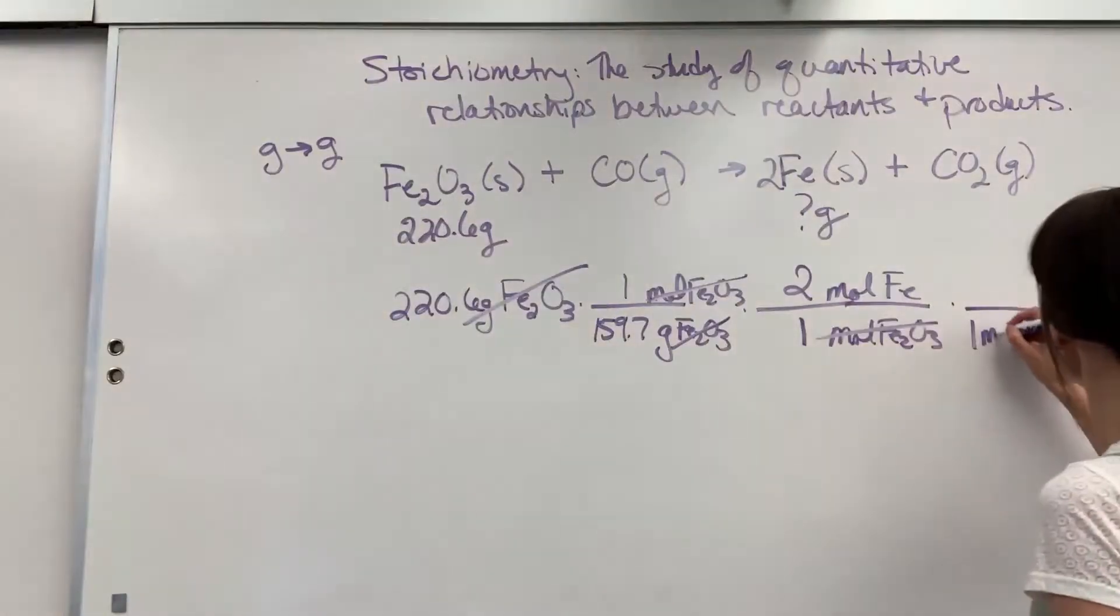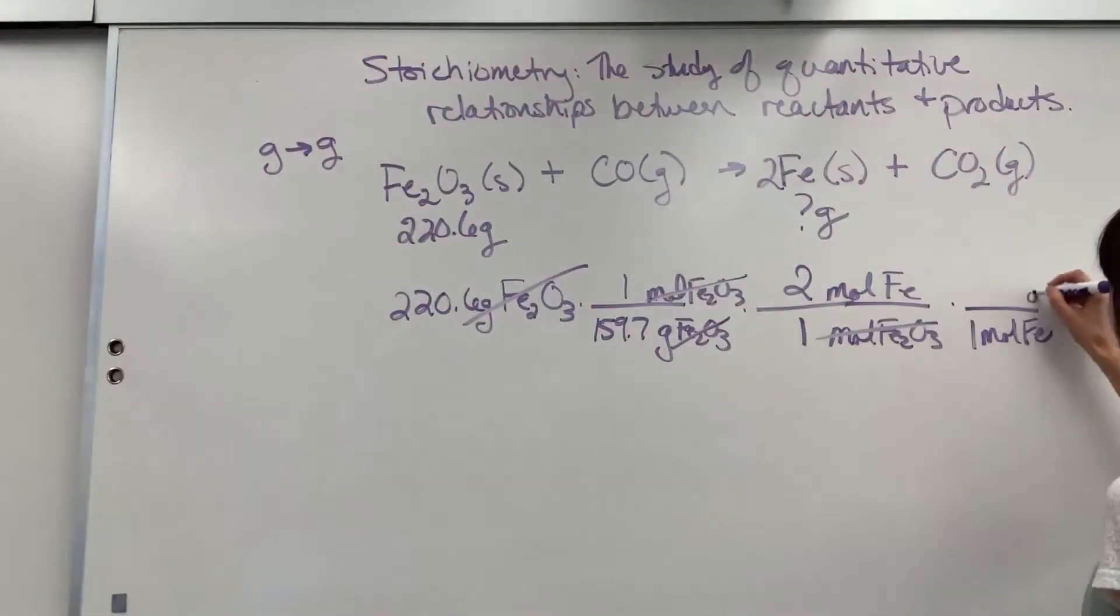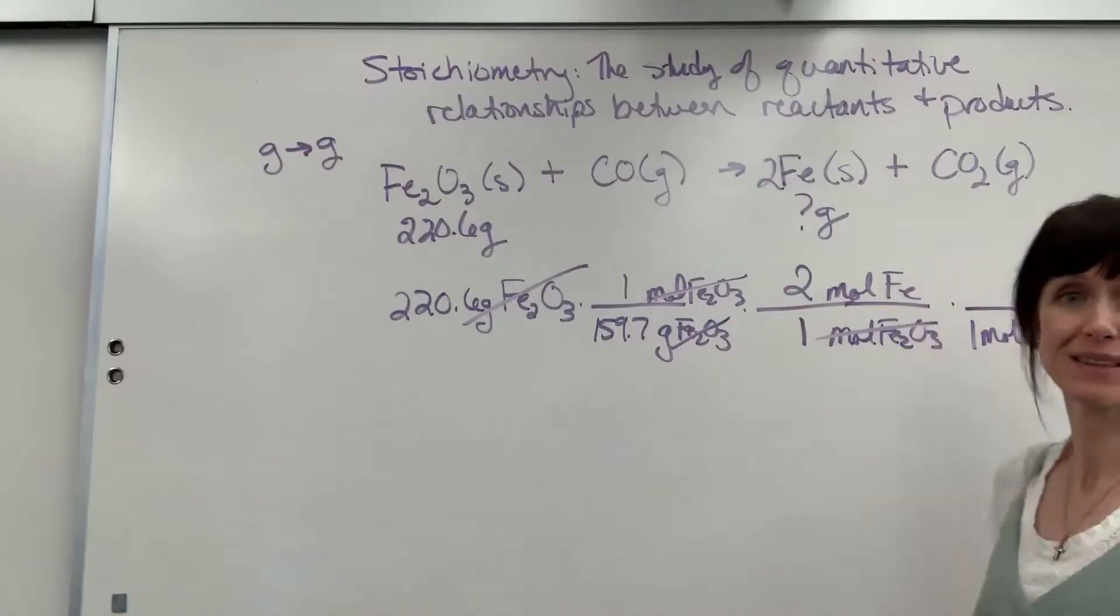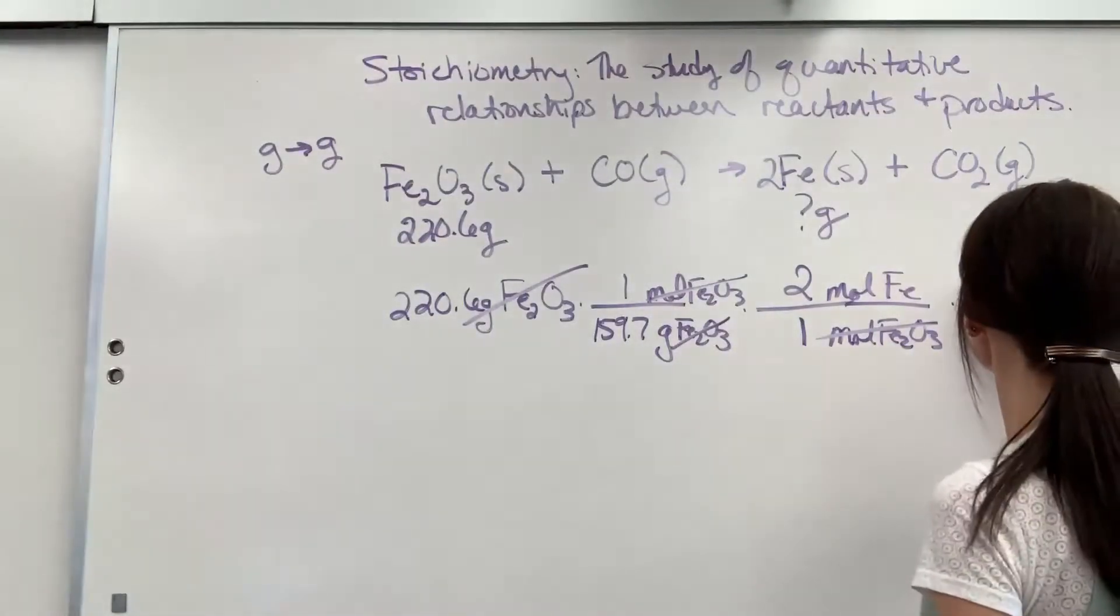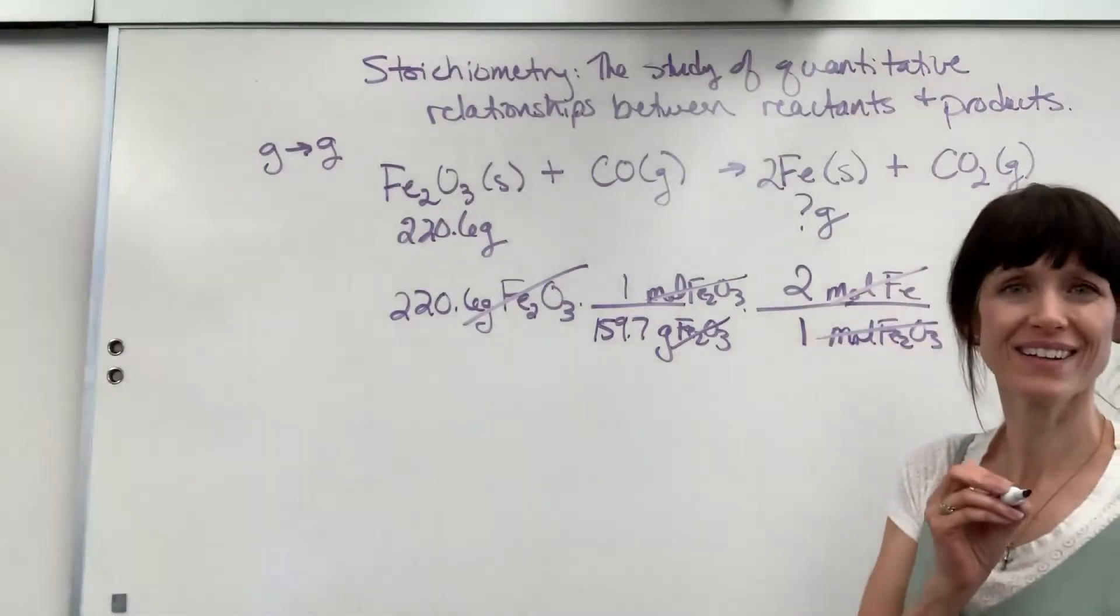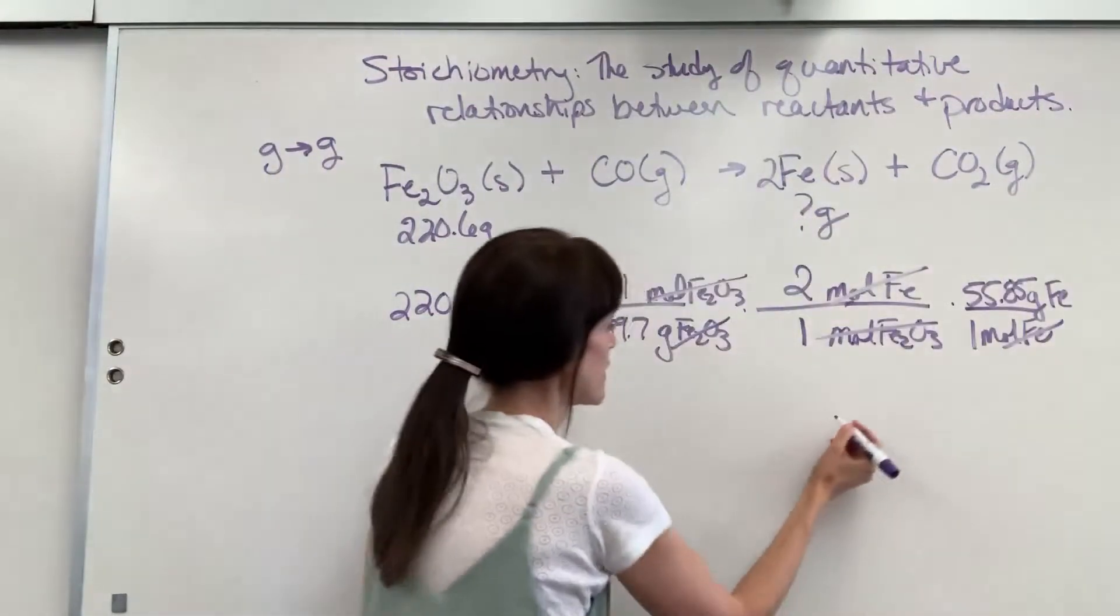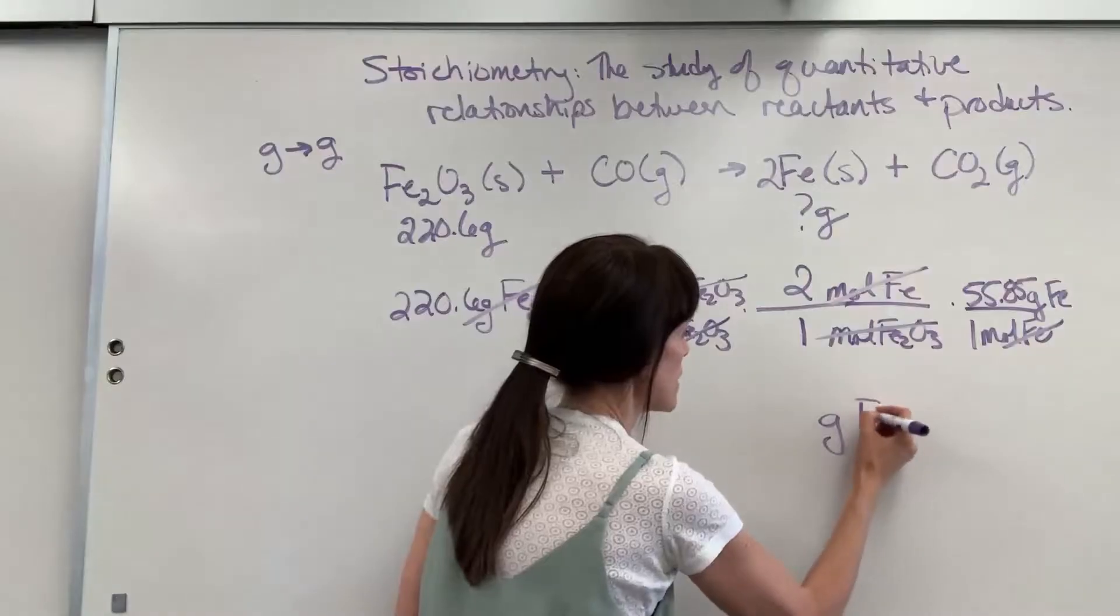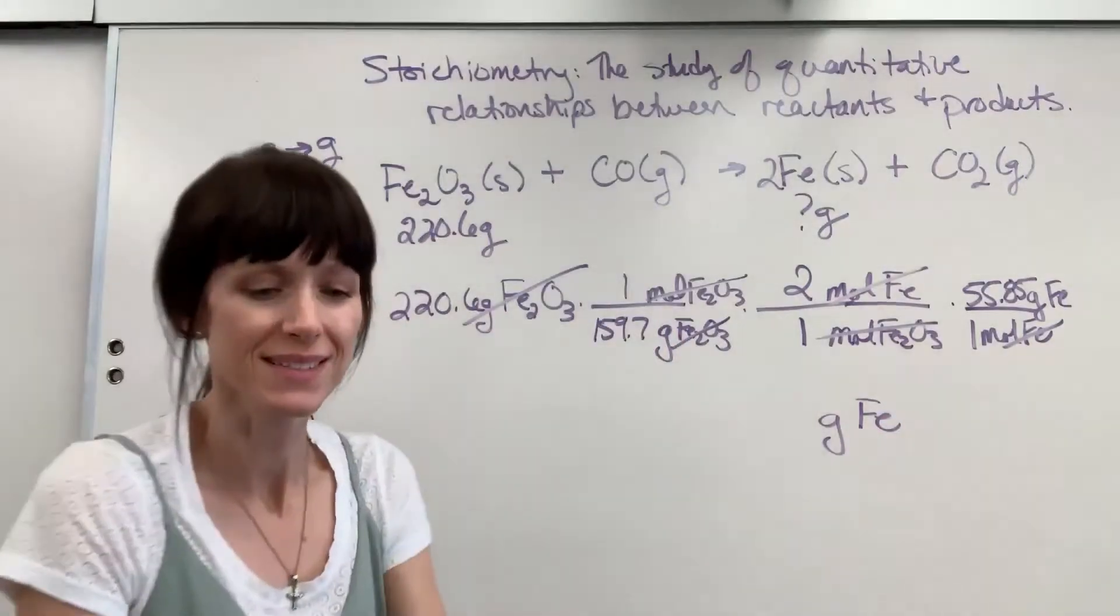One mole of iron. I put my grams of iron. Look at the periodic table, and it's 55.85. Notice moles of iron cancels. So we will be left with grams of iron. So putting this in your calculator,